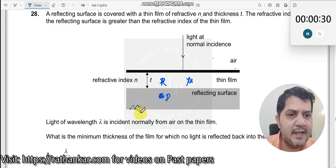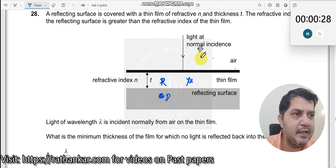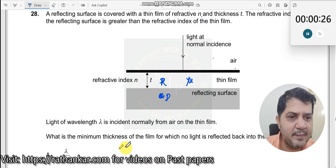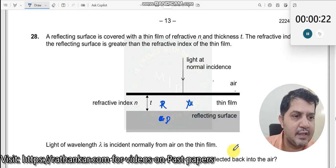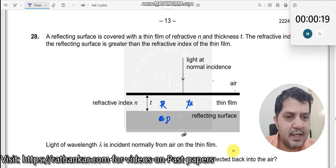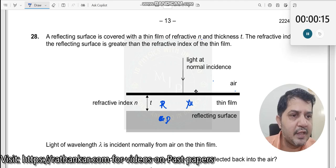Light of wavelength lambda is incident normally from air on the thin film. What is the minimum thickness of the film for which no light is reflected back into the air? So what is the condition for the minimum thickness such that no light should get reflected back?